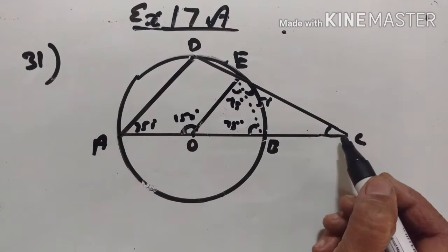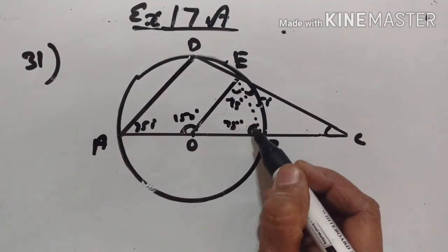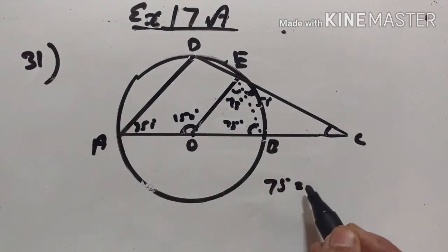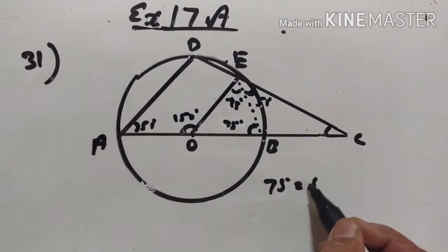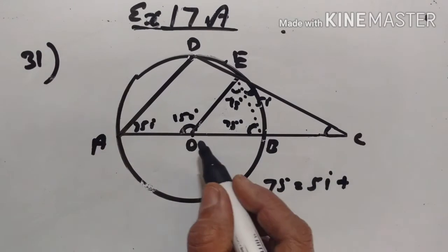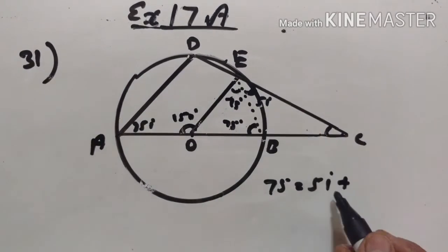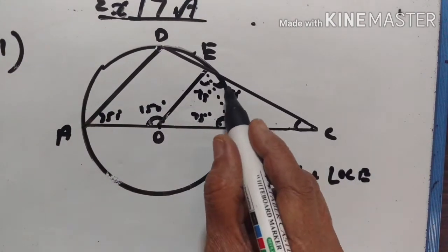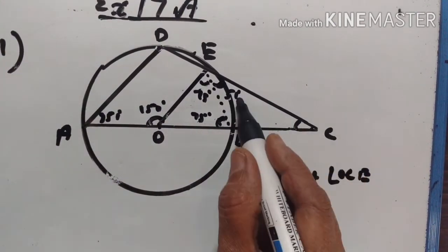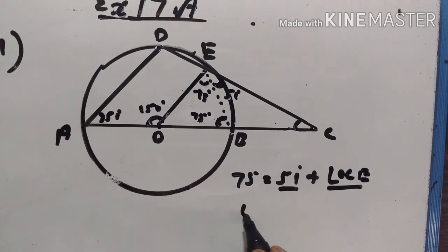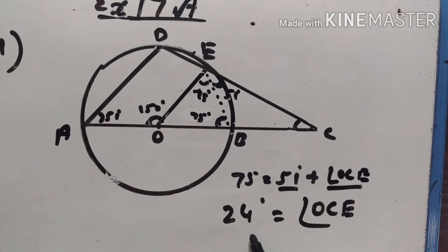Now, in triangle EBC, angle EBO is the exterior angle. The exterior angle equals the sum of the interior opposite angles. So 75 degrees equals 51 degrees plus angle ECB. Therefore, angle OCE equals 75 minus 51, which equals 24 degrees.